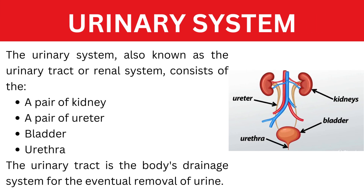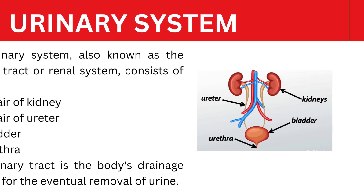The urinary system, also known as the urinary tract or renal system, consists of a pair of kidneys, a pair of ureters, bladder and urethra. The urinary tract is the body's drainage system for the eventual removal of urine.